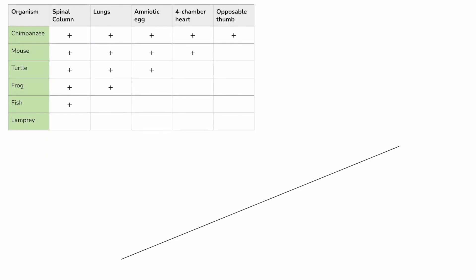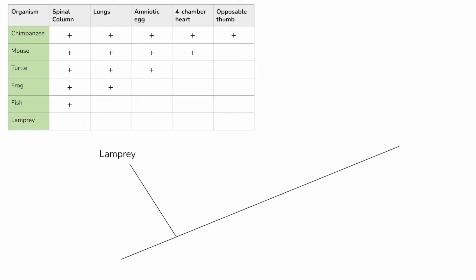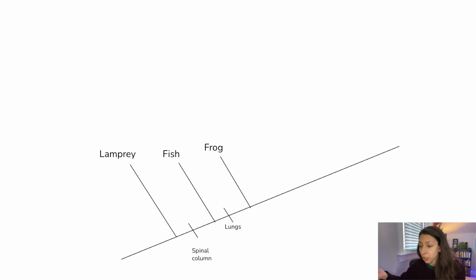All right, here we go. We'll start with our original branch, original line with our common ancestor down here at the bottom. And we'll start with the lamprey because if we go back to our table, we can see that the lamprey actually did not have any of these traits. So that'll be the first organism on our phylogenetic tree. Followed by fish. Fish only have one of those characteristics in the table, and that was the spinal column. So we can include spinal column here. And everything that comes after that spinal column will also have that trait. We're working towards the simplest explanation as possible when we're creating this. So we don't want to include, for example, the frogs before the fish because then we would have to add lungs and then take them away again on our tree diagram.